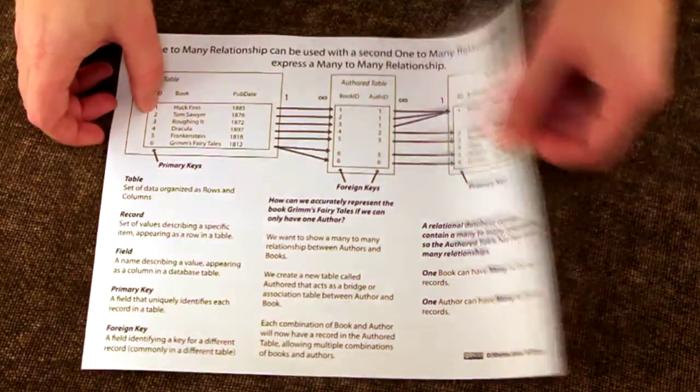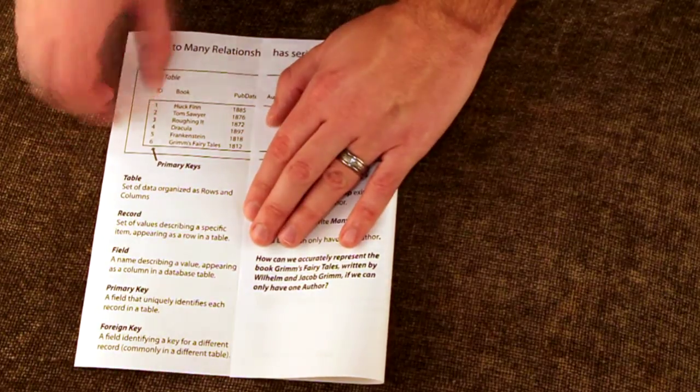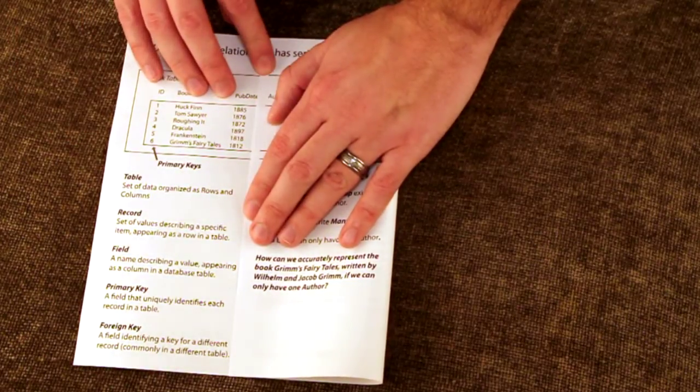This pamphlet used both sides of the paper to accommodate the removal of the foreign keys from the book table, which could not be simulated with only a single side of the paper.